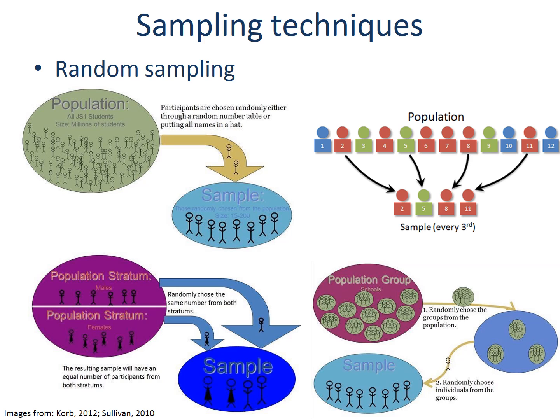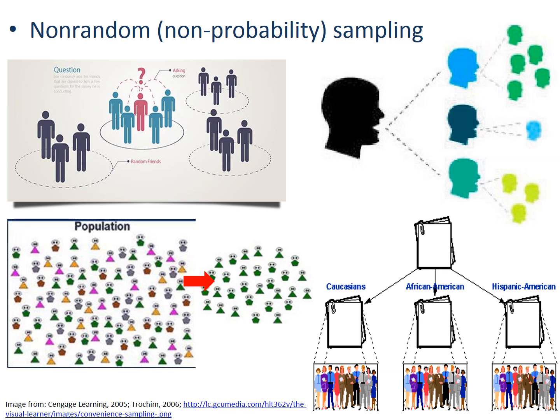In some cases, your population might consist of several groups. These subgroups are called clusters, and each cluster represents the population. Therefore, cluster sampling has you first randomly choose the groups or clusters — for example, academic programs that make up a university — and then select individuals from each cluster.